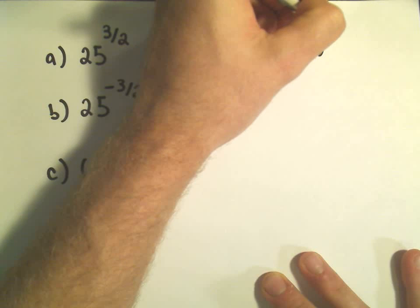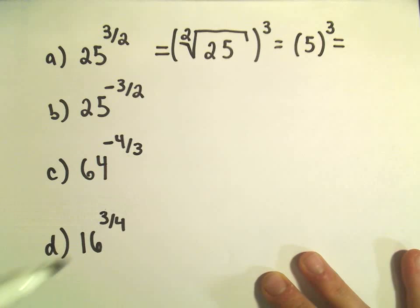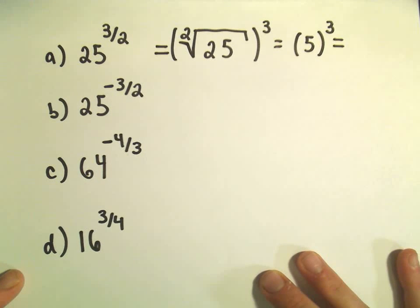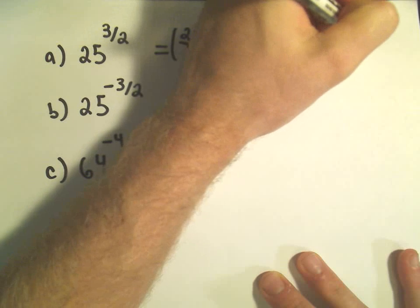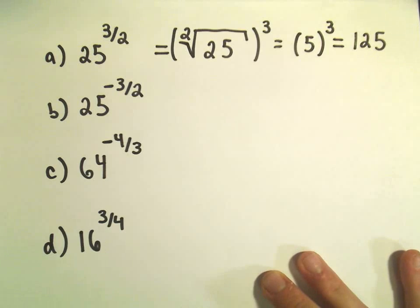And then we have to raise that to the third power. So 5 times 5 is 25, times another 5 would give us 125 as our solution.